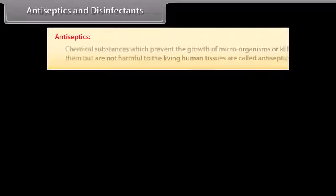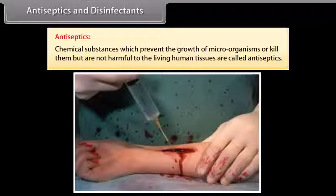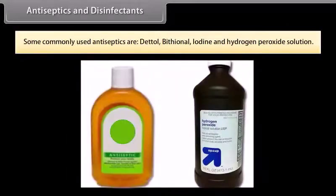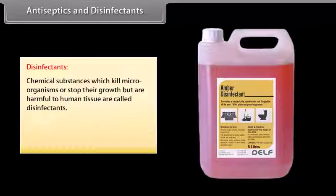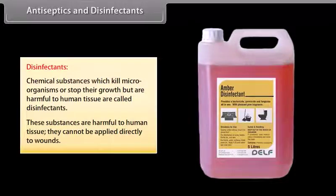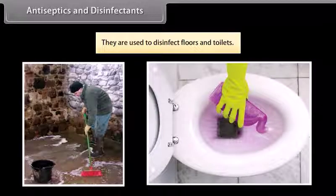Antiseptics and disinfectants: antiseptics are chemical substances which prevent the growth of microorganisms or kill them but are not harmful to living human tissues. They are applied to the living tissues, wounds, ulcers, and diseased skin surfaces. Commonly used antiseptics are Dettol, bithionol, iodine, and hydrogen peroxide solution. Disinfectants are chemical substances which kill microorganisms or stop their growth but are harmful to human tissues. They cannot be applied directly to wounds and are used to disinfect floors and toilets. For example, phenol, sulphur dioxide, and chlorine.